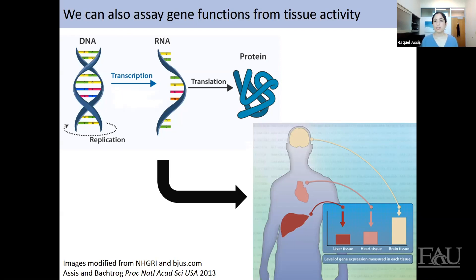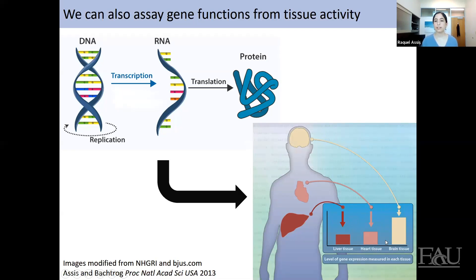By looking at gene activity and comparing it across organs, we can start to infer what a gene is doing. For example, if we sequence all of the RNA from a particular gene in the brain, heart, and liver, and we measure how much RNA is in each organ — a little in the liver, a bit more in the heart, and about double in the brain — we might infer that gene has an important role in brain function. We can also sequence different developmental stages, such as babies and adults of different ages, to understand more about what a gene is doing.